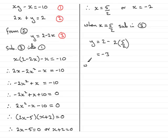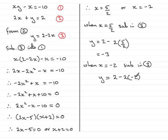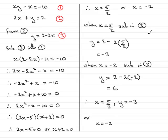Similarly, when x equals minus 2, substituting into equation 3: y equals 2 minus 2 times (minus 2). Minus 2 times minus 2 is 4, and 2 plus 4 is 6. So y equals 6. Always summarise your results at the end: therefore x equals 5 over 2 and y equals minus 3, or x equals minus 2 and y equals 6.